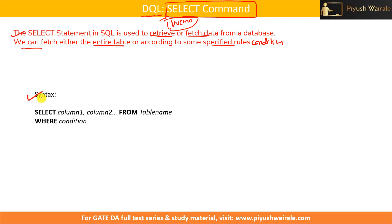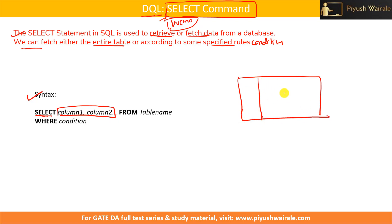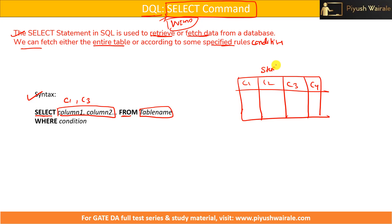This is the syntax for SELECT command. SELECT is a keyword. After SELECT, you mention whatever column names you want to fetch. For example, I have a table 'student' having four columns C1, C2, C3, C4. If I want to fetch only C1 and C3, then I can mention SELECT C1, C3 FROM — where FROM is also a keyword — and then mention the table name, for example 'student'. The WHERE clause is the filtering condition; based on that condition, it will give us the data.